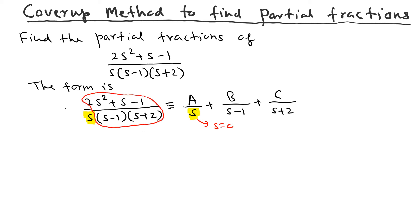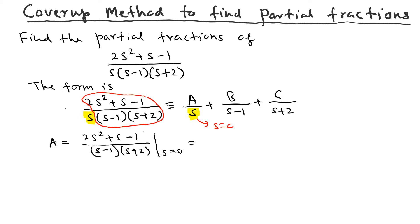So to find A, we ignore s in the denominator, leaving (s − 1)(s + 2), and plug in s = 0. The numerator gives −1, and the denominator gives (−1)(2) = −2, so A = −1 / −2 = 1/2.